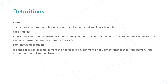The index case is the first case among a number of similar cases that are epidemiologically related — meaning it is the first case in the outbreak that is epidemiologically linked to the remaining cases. Environmental sampling is the collection of samples from the healthcare environment or equipment rather than from humans, cultured for microorganisms. It can be used in some outbreak investigations to identify sources of infection.